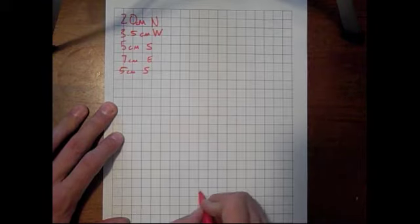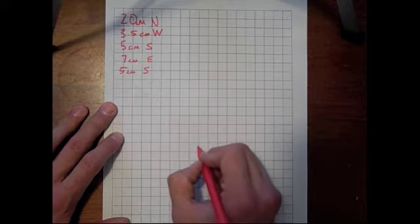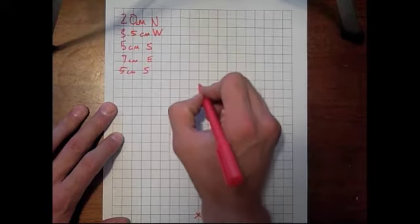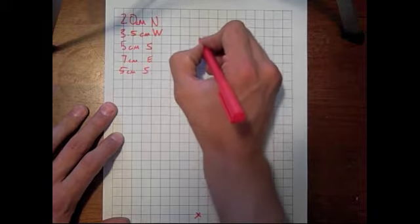So let me draw this first one real quick. We go 1, 2, 3, 4, 5, 6, 7, 8, 9, 10, 11, 12, 13, 14, 15, 16, 17, 18, 19, 20.